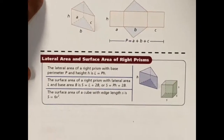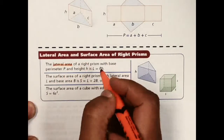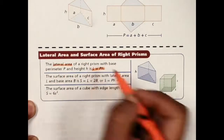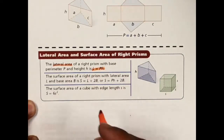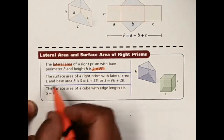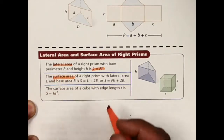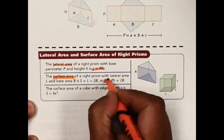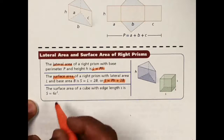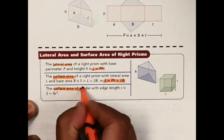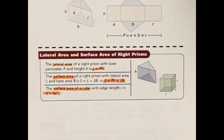Here are the formulas you need to know. The lateral area — remember, that does not include the bases — is L equals pH, where P is the perimeter of the base and H is the height of the prism. The surface area, meaning total surface area, is pH plus 2B. The special case for a cube is S equals 6s squared.